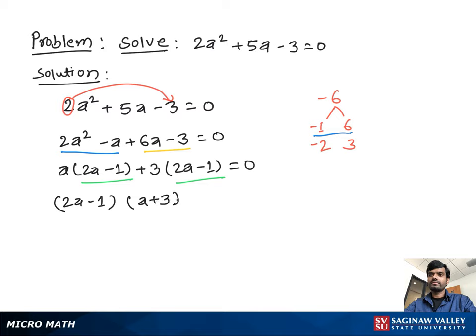Now these both terms multiply to give us 0, so we set each term equal to 0. So we set 2a minus 1 equal to 0 or a plus 3 equal to 0.